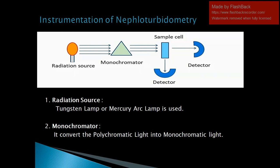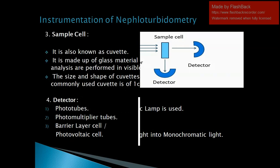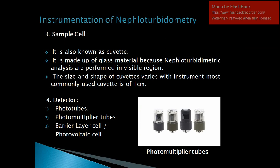Radiation sources used in nephroturbitometry are the tungsten lamp or mercury arc lamp. The monochromator converts polychromatic light into monochromatic light. The sample cell, also known as a cuvette, is made of glass material because nephroturbitometry analyses are performed in the visible region. The size and shape of the cuvette varies with the instrument; the most commonly used cuvette is 1 cm. Detectors used in nephroturbitometry include phototubes, photomultiplier tubes, and photovoltaic cells or barrier layer cells.